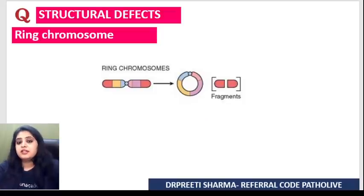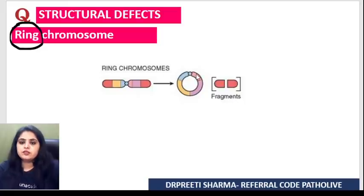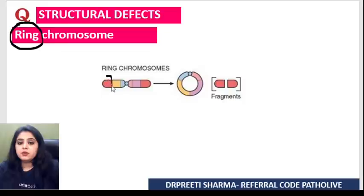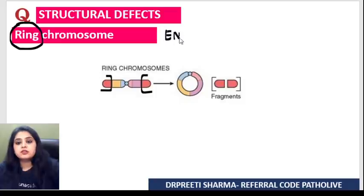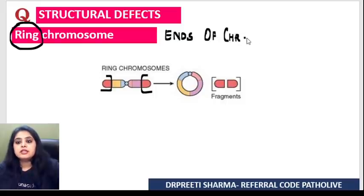The next one is a very interesting one known as ring chromosome. As the word suggests, the chromosome is going to become like a round ring. But why does that happen? When the ends of the chromosome are damaged, the chromosome starts folding and becomes a ring.